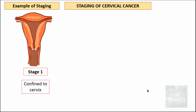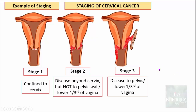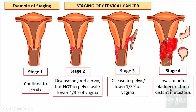As an example, let us understand the staging of cervical cancer. Stage 1 is where the cancer is confined just to the cervix. Stage 2 involves the cervix and extends beyond it, but not to the lower third of the vagina nor to the pelvic wall. Stage 3 is where the disease extends into the pelvis and into the lower third of the vagina. Stage 4 has invaded distant organs such as the rectum, bladder, and intestines, and can include distant metastasis to abdominal organs like the liver and spleen.